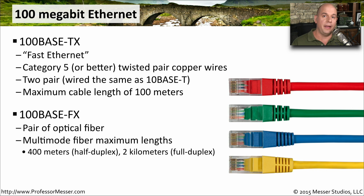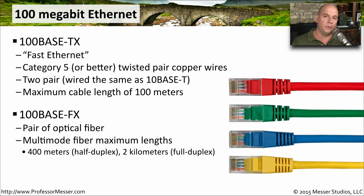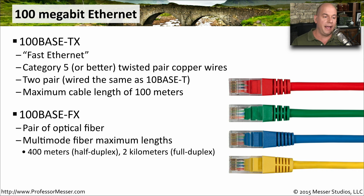There is also a fiber standard for 100 megabit Ethernet called 100BaseFX. This uses a pair of optical fiber — one for transmit and one for receive. The maximum link length for multimode using 100BaseFX is 400 meters if running half duplex, or two kilometers if running a full duplex connection.